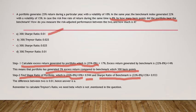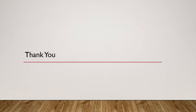Why didn't we use Treynor's ratio? Because to calculate Treynor's ratio, we need beta, which is not mentioned in this question. Only standard deviation is mentioned, so we use the Sharpe ratio. I've now solved all three questions. I hope this helps you understand how to approach similar questions in the exam. Thank you for watching — please subscribe, like, and comment.